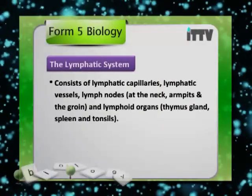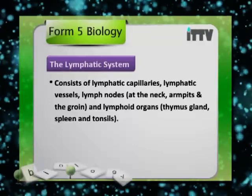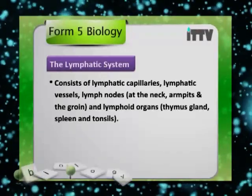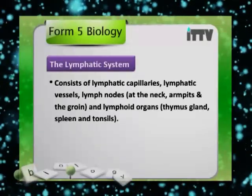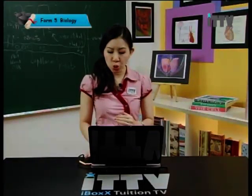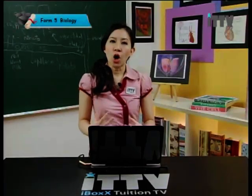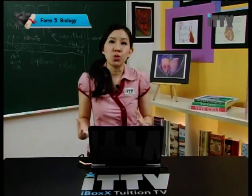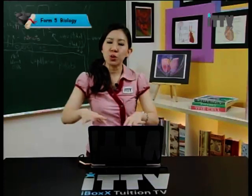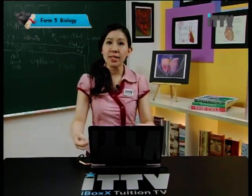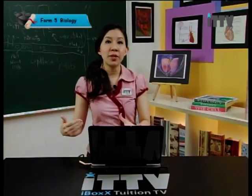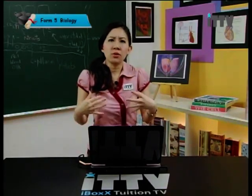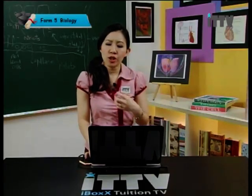The lymphatic system consists of lymphatic capillaries, lymphatic vessels, lymph nodes at the neck, armpits and the groin, and lymphoid organs which consist of the thymus gland, spleen and tonsils. 90% of the interstitial fluid which was bathing the cells in the intercellular space is supposed to return back into the blood circulation via the capillaries. But if it remains between the cells, it will cause the tissues to swell up, resulting in conditions like elephantiasis.